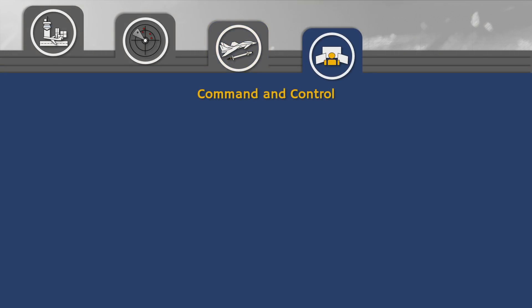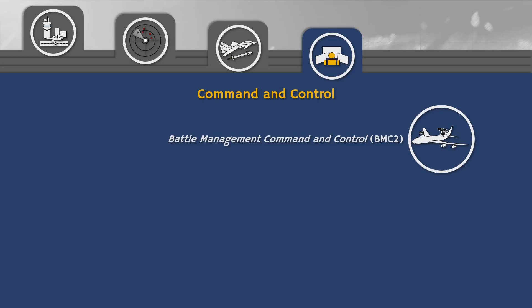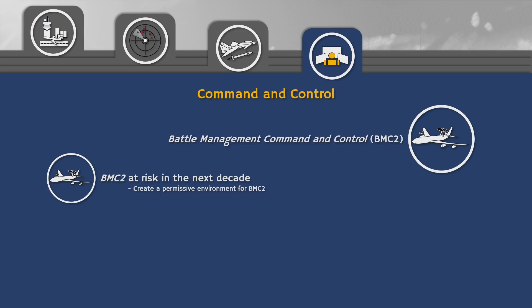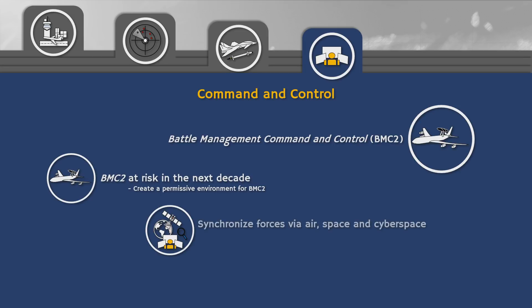Command and Control. Air Force capabilities were greatly enhanced using Battle Management Command and Control platforms — BMC2 in short — like AWACS. By 2030, such capabilities might be at risk. AS 2030 advises the establishment of a more flexible and robust battlespace information architecture, including advanced battle management systems that allow BMC2s to function in a stressed environment. Commanders should also be able to synchronize forces and assets without direct contact. Capability development across air, space, and cyberspace is directed towards enabling operational-level command and control in any situation.